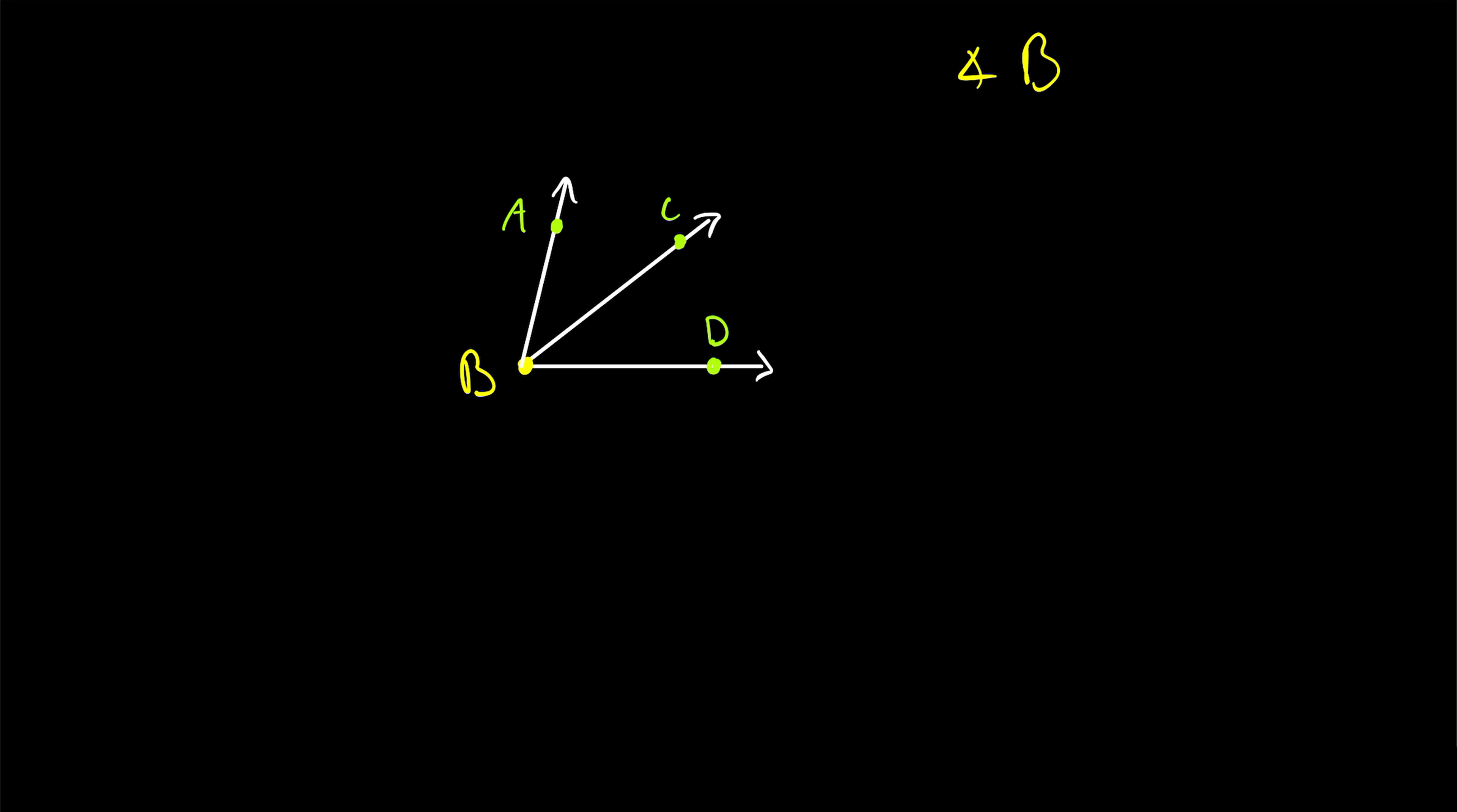For example, how might we name this angle here? You might guess that we just need to use the letters A, B, and D. And you're exactly right. So instead of just calling this angle B, since that isn't specific enough anymore, we can call it angle A, B, D.